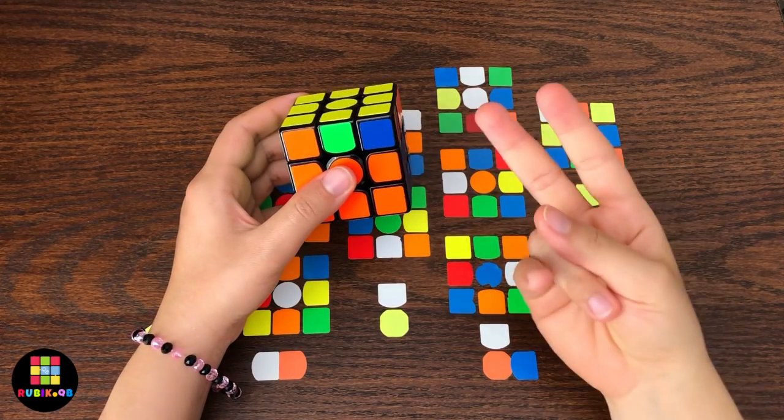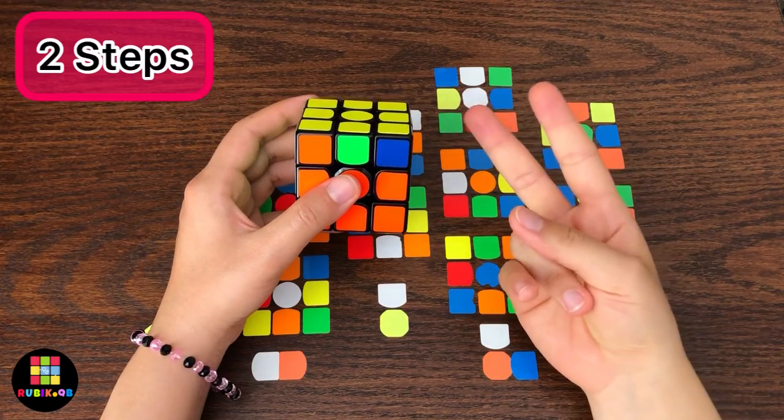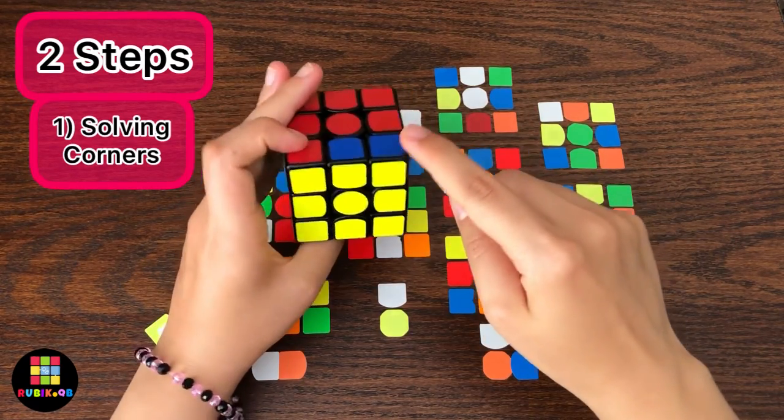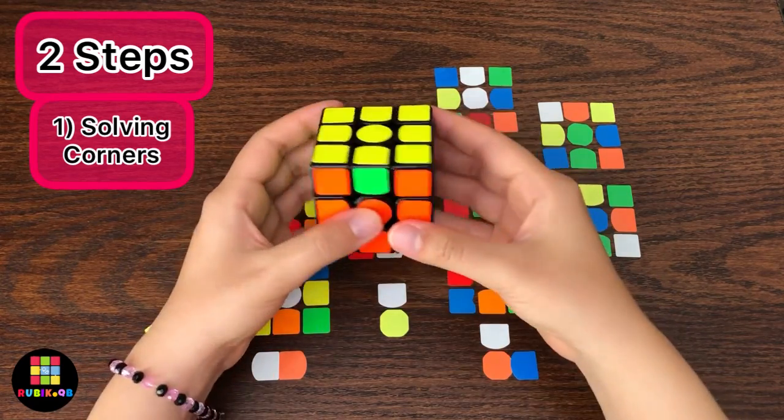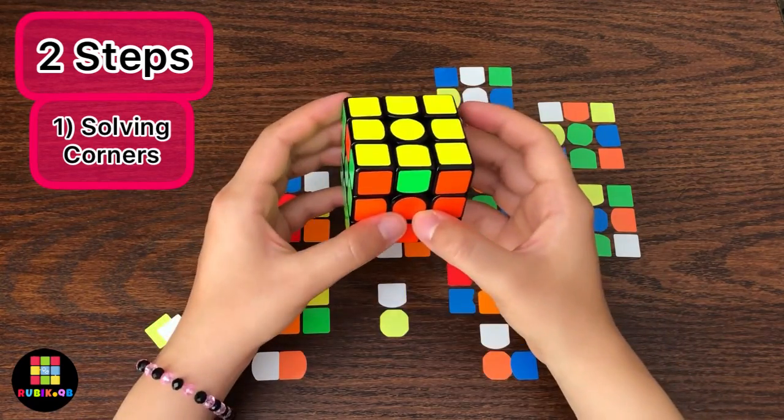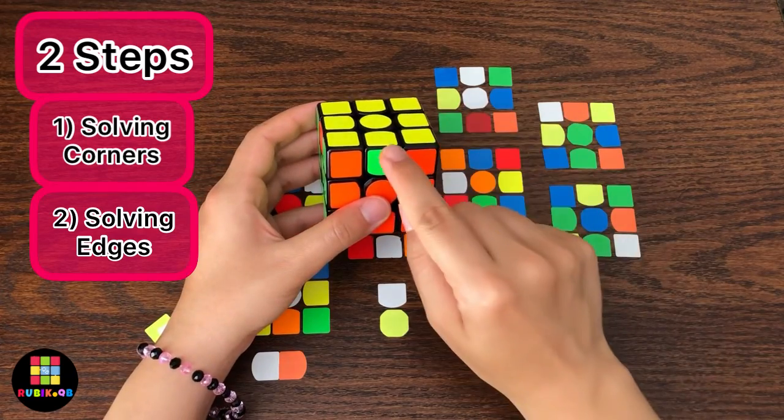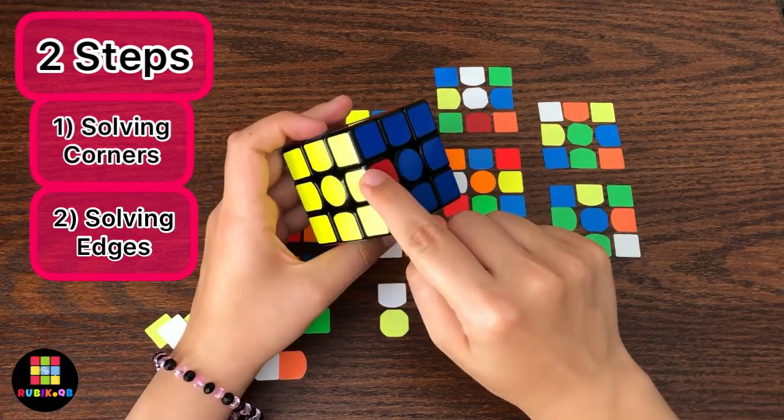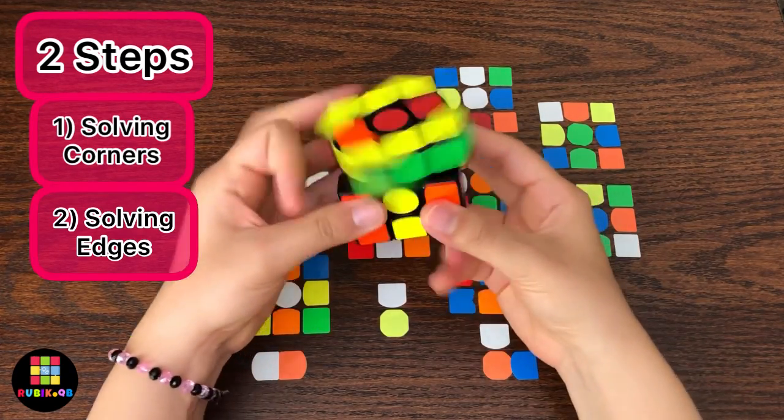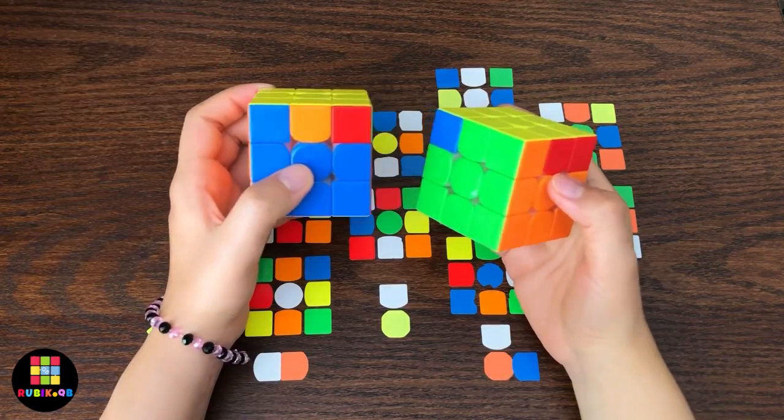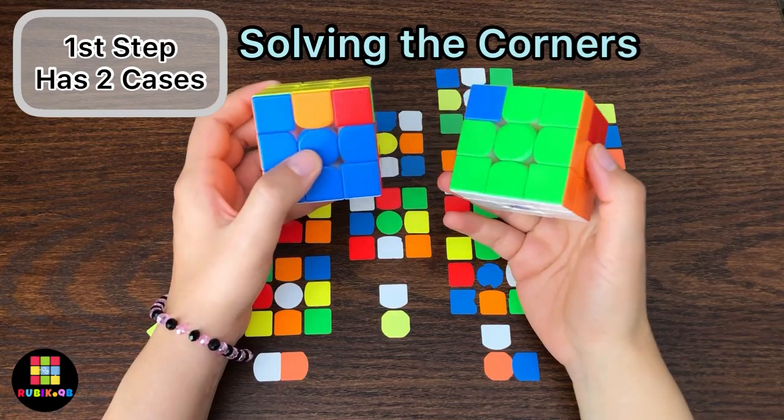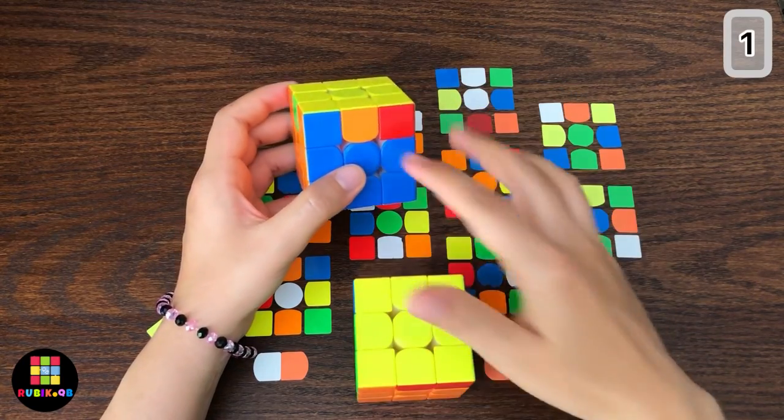For 2 Look PLL we have two steps. First we solve all the four corners like this. Then for the second step we solve all the edges. For this step we have two different cases.